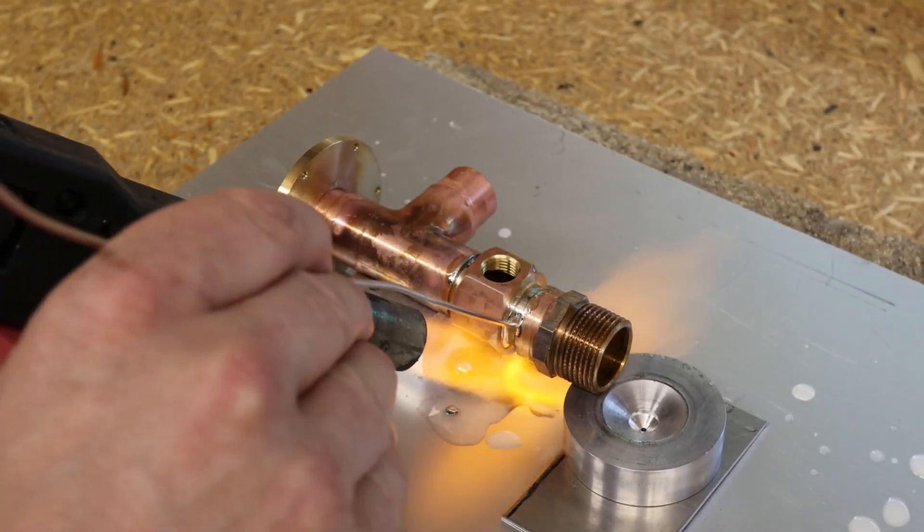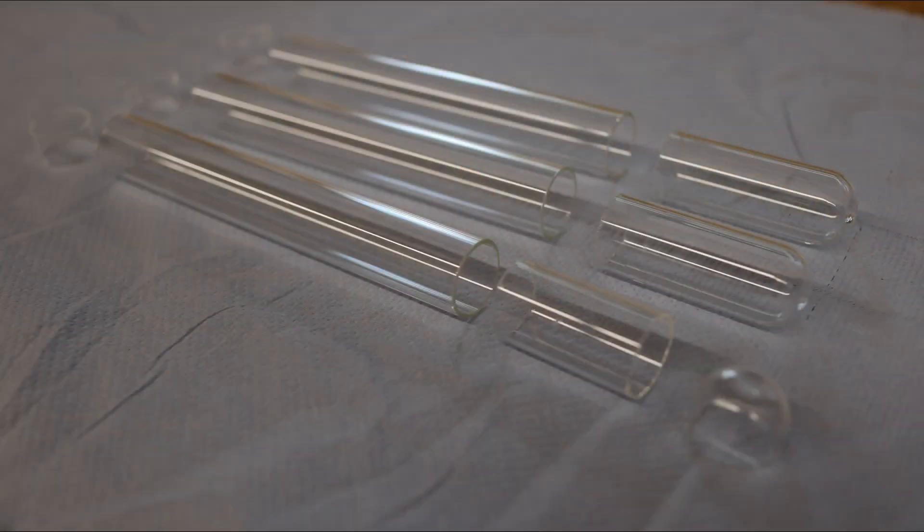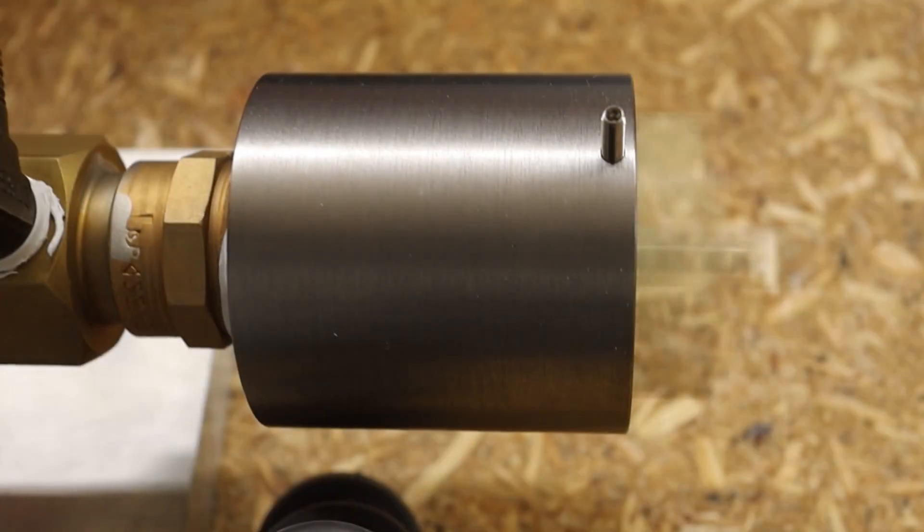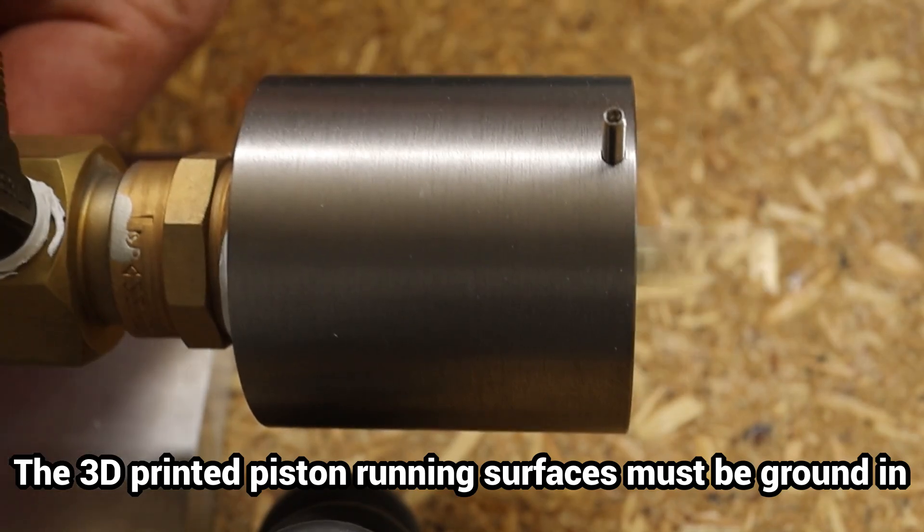Soldering can easily be replaced by gluing or taping the tubes together. With a little care, the Pyrex test tube can be easily cut using a mini-drill and an inexpensive diamond cutting disc. The power extraction unit is easy to produce with a 3D printer, and the piston running surfaces must be ground accordingly.